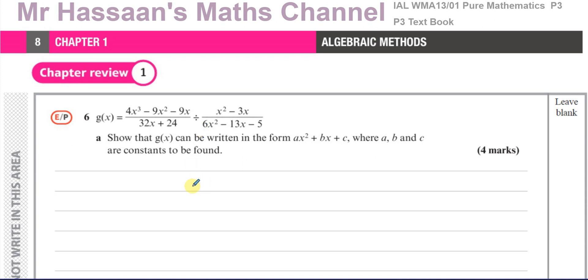One of the students has asked me to answer this question. So it says g(x) is equal to 4x³ - 9x² - 9x over 32x + 24 divided by x² - 3x over 6x² - 13x - 5. Show that g(x) can be written in the form ax² + bx + c, where a, b, and c are constants to be found.